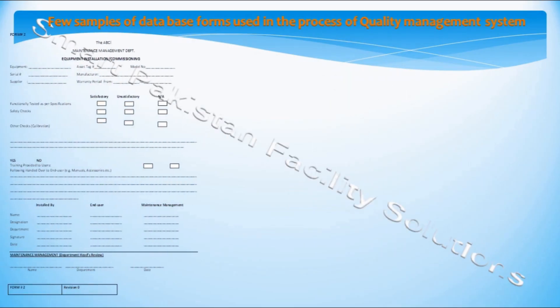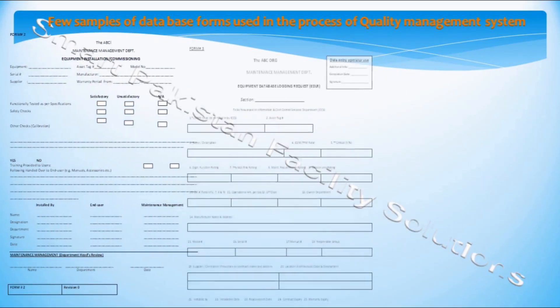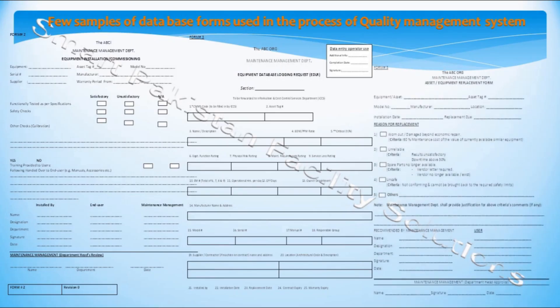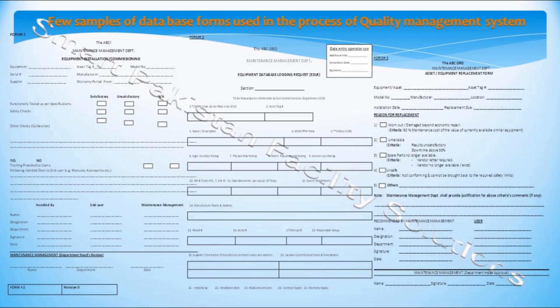For the quality management system, forms for database are also required. These may be in hard or soft format, and the number and type of forms depend on the organization's business. A few examples shown here include equipment installation, logging, and replacement forms.